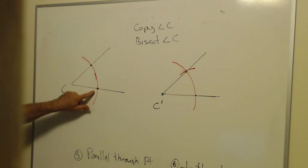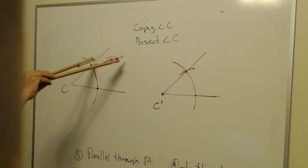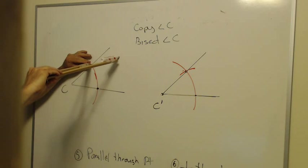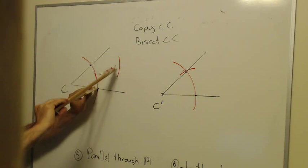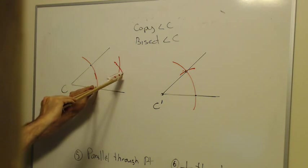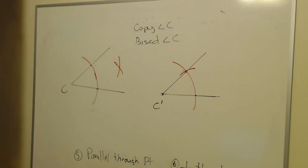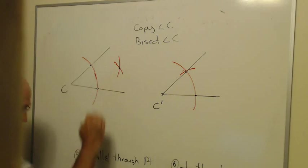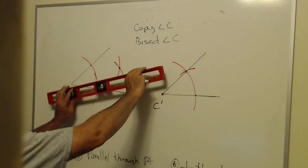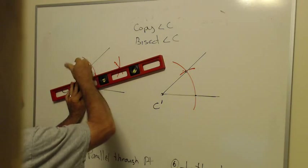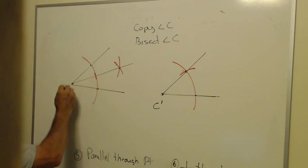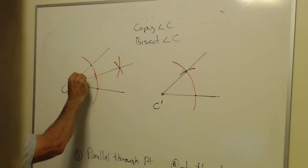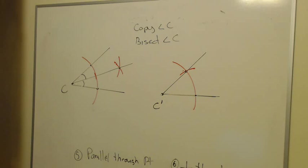From the two points where angle C got cut by the arc, from each of those, I'm going to draw an arc out in the middle of angle C. So I put the pointy end up here and do an arc in the middle. Now I'm going to put the pointy end here and draw an arc out in the middle. Where those two arcs cross, that point will be connected to C. This new ray that I'm drawing is bisecting angle C, which means it's cut angle C into two angles that are congruent to each other.